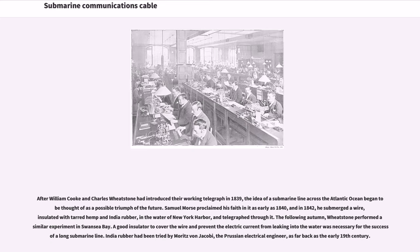After William Cook and Charles Wheatstone had introduced their working telegraph in 1839, the idea of a submarine line across the Atlantic Ocean began to be thought of as a possible triumph of the future. Samuel Morse proclaimed his faith in 1840, and in 1842, he submerged a wire insulated with tarred hemp and India rubber in the water of New York Harbor and telegraphed through it. The following autumn, Wheatstone performed a similar experiment in Swansea Bay.